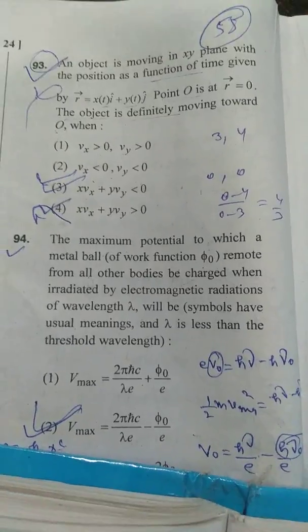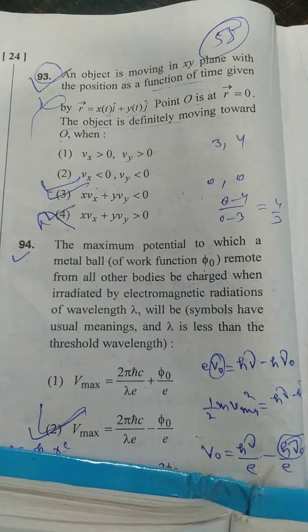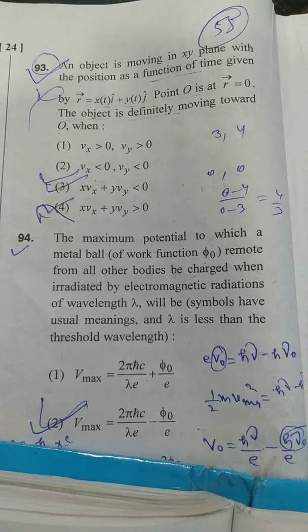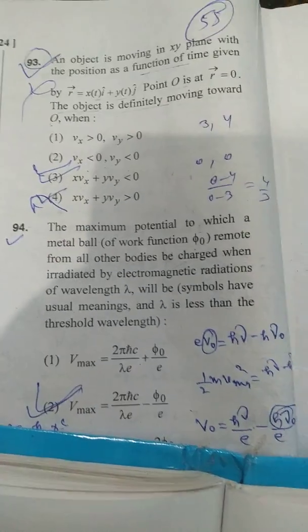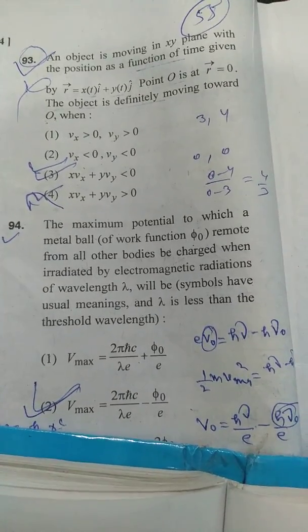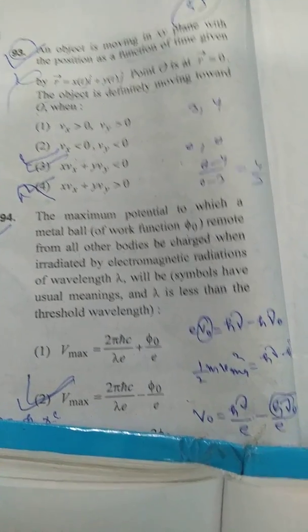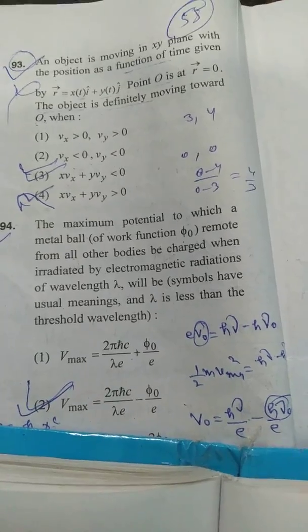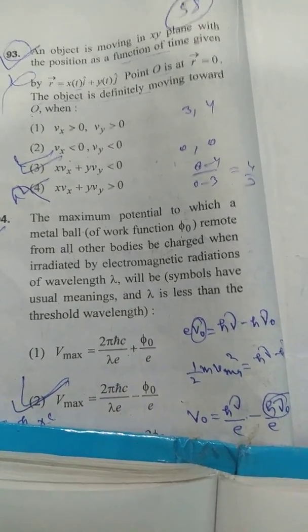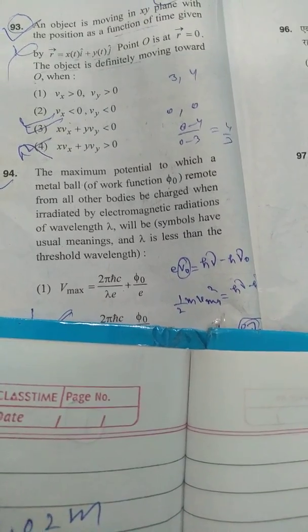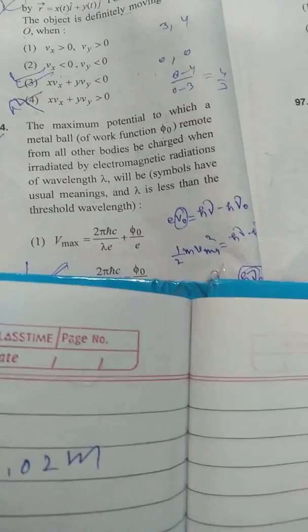Question 93: An object is moving in the x-y plane with position vector r = x(t)i + y(t)j, where O is the origin and dr/dt is given. The object is definitely moving towards the origin, so its position coordinates are decreasing. Velocity will have the opposite sign to position, meaning the dot product of position vector and velocity is always negative, so their sum is also negative. Option number 3 is correct.